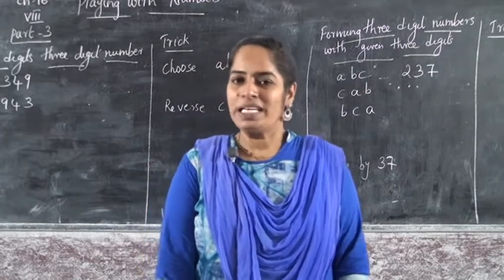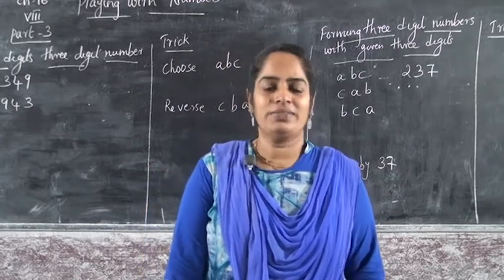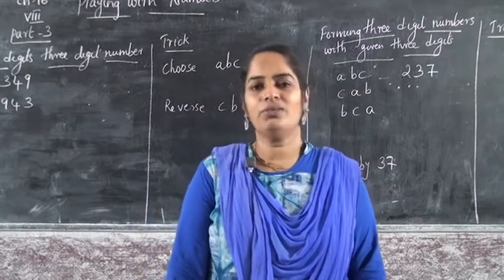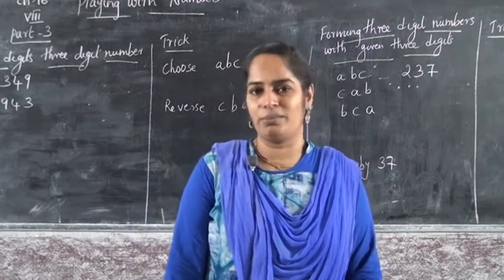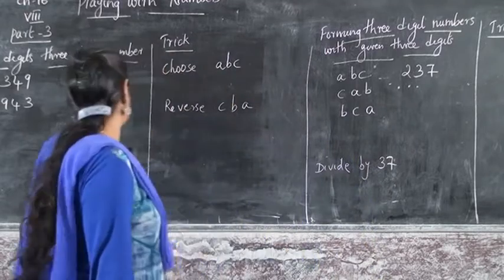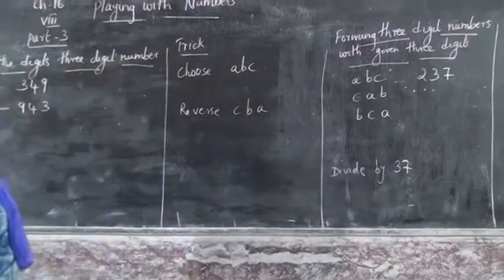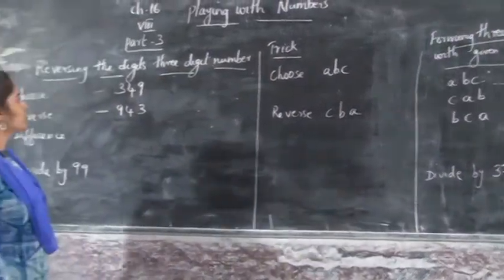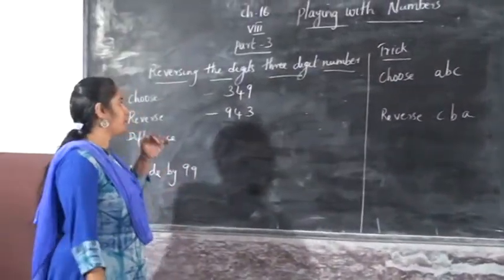Now we can go to the next 3-digit topic. We studied already what? 2-digit numbers. Now we can go to 3-digit. Here, reversing the digit of a 3-digit number.